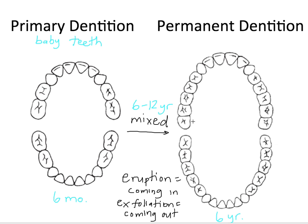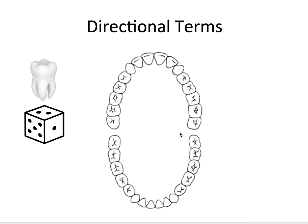It takes a little bit longer for the third molars to come in. They could be coming in as late as 18, 19, or 20 years old. So those are the primary dentition and the permanent dentition.